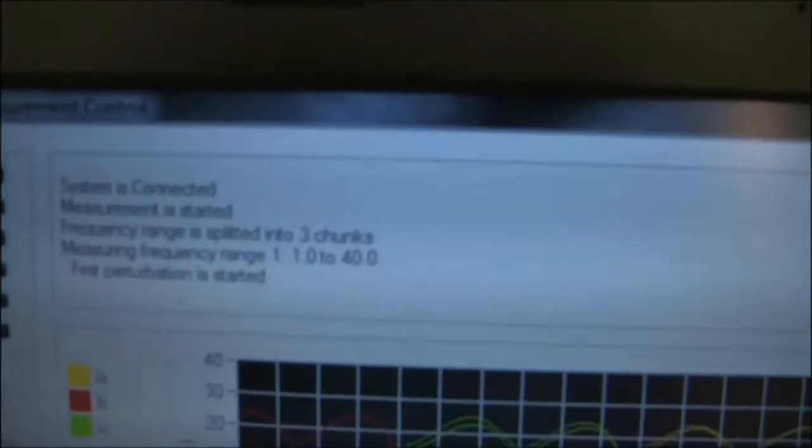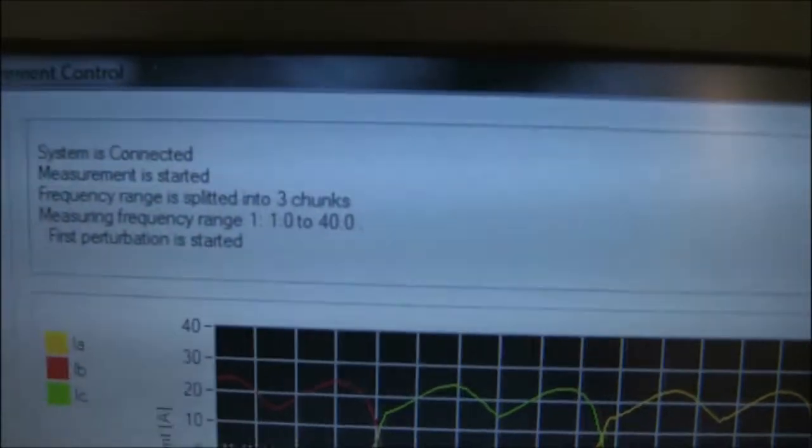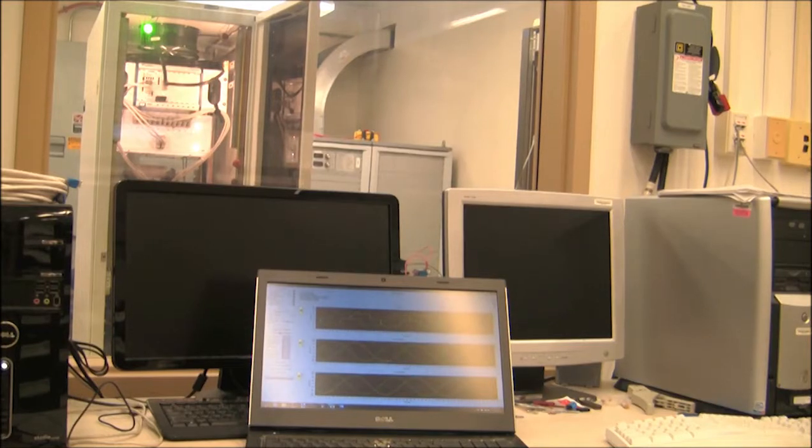Here in this corner we can see that we are doing the low frequency measurement from 1Hz to 40Hz. This is injection on the D channel, first perturbation. Now we need to wait 10 minutes to get the measurements done.